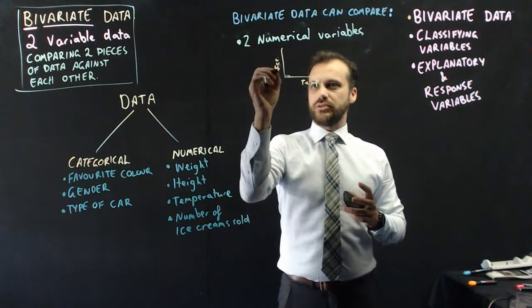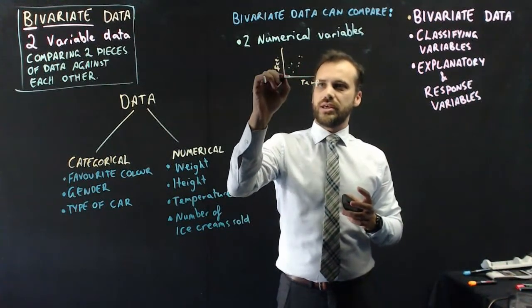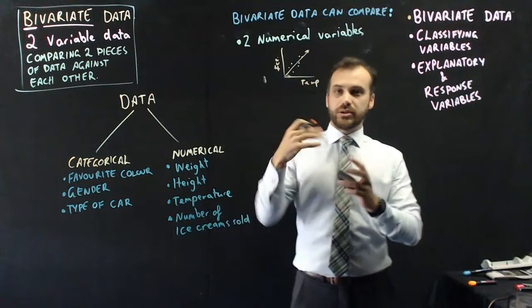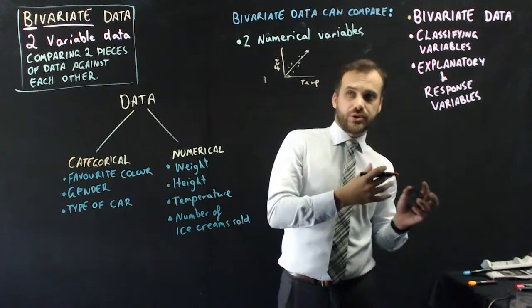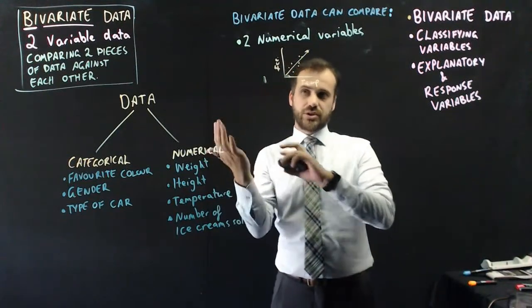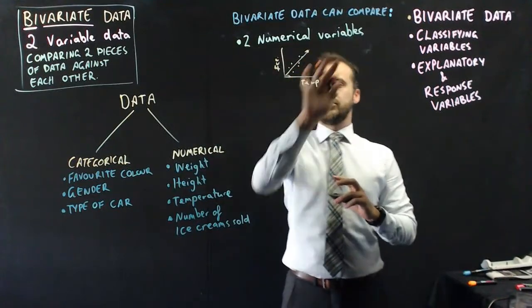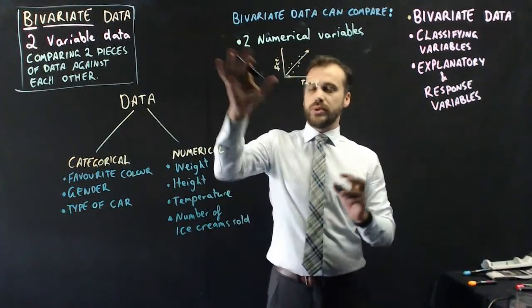This could also be temperature and number of ice creams sold. And we put our little dots in here, and we could draw a line through it. And we could make predictions about if the temperature was this, the number of ice creams sold would be that. So two numerical variables, we could compare them.